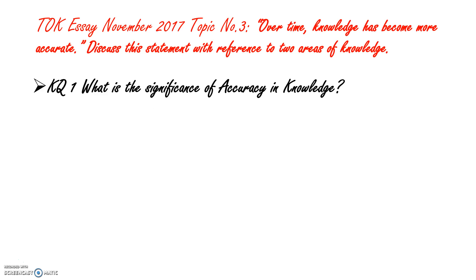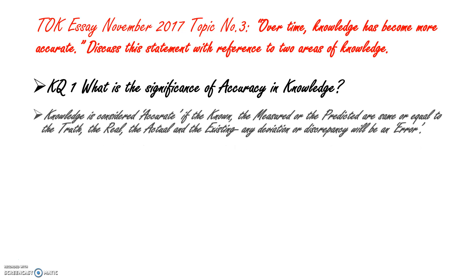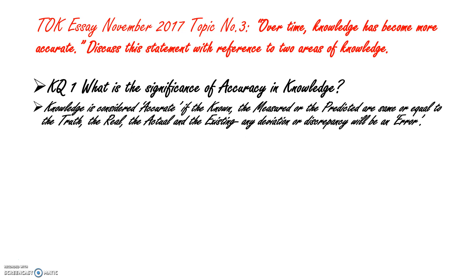Knowledge Question 1: What is the significance of accuracy in knowledge? Knowledge is considered accurate if the known, the measured or the predicted are the same or equal to the truth, the real, the actual and the existing. Any deviation or discrepancy will be an error.